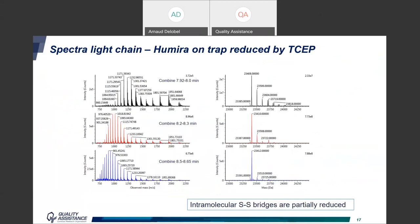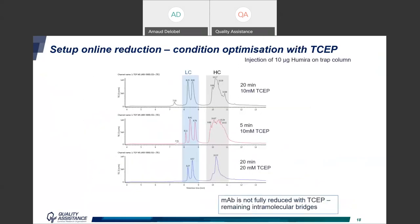In other words, the intramolecular disulfide bridges are not reduced, both for the light chain and the heavy chain. We tried different TCEP conditions — increasing the concentration and increasing the flushing duration — but in all cases we had multiple peaks indicating the antibody was not fully reduced and that intramolecular bridges remained.